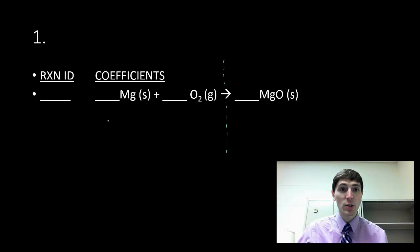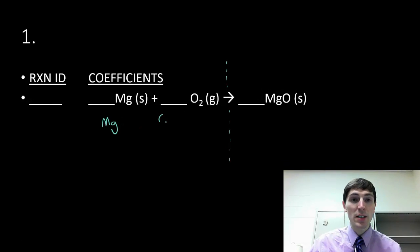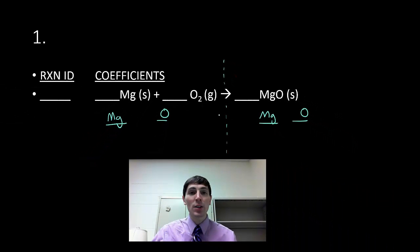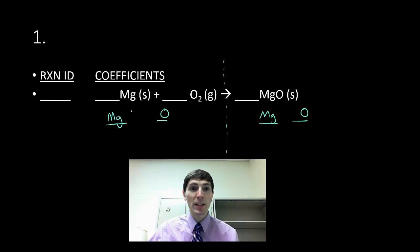So what I like to do is make a little chart. We have magnesium, and the other element present on this side is oxygen. On the other side of the equation I have the same compounds — magnesium and oxygen. We're going to count up, using the subscripts, how many of each atom are present. Magnesium has no subscript, so it's just one; I have one magnesium and two oxygen.